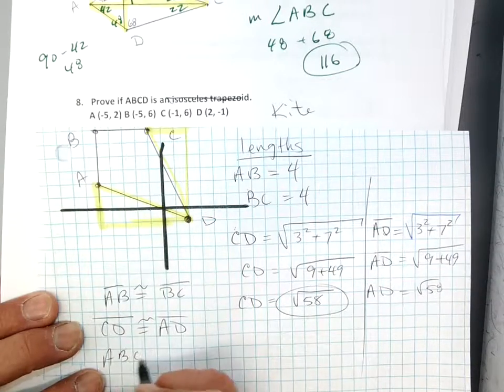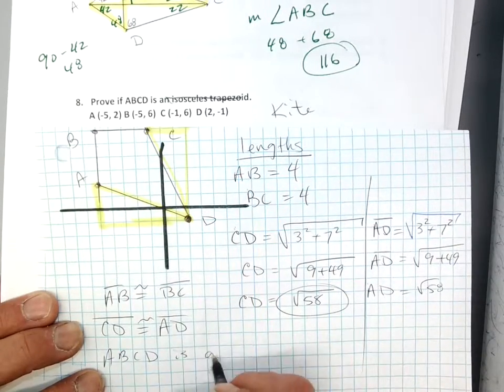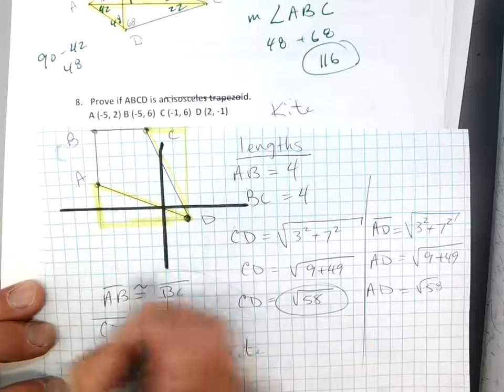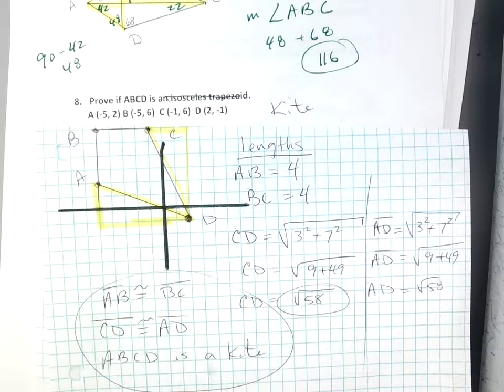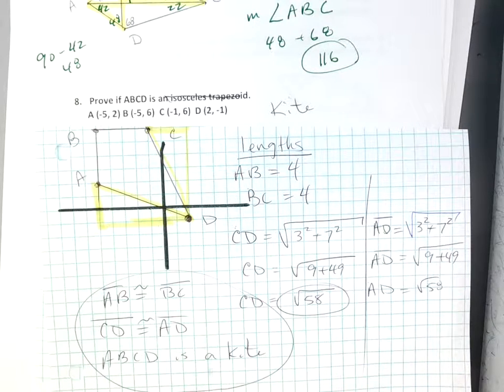I proved it, okay? We just did a proof. I proved adjacent sides are equal. It's got to be a kite. Okay, and that's all I have. I do have a homework assignment for you. Thanks for being quiet. Thank you.